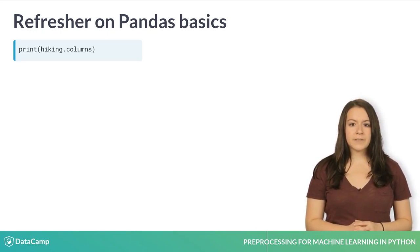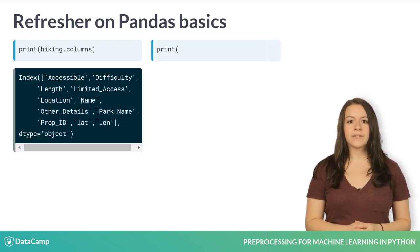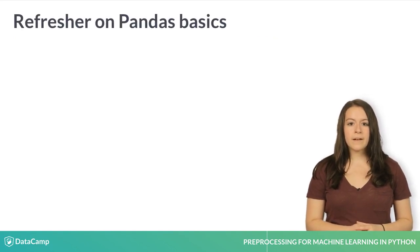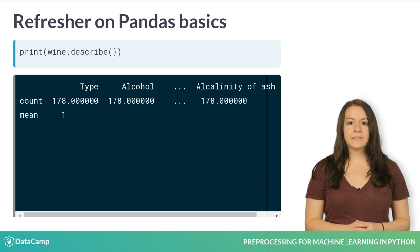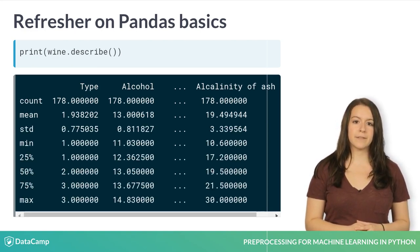It's useful to be able to generate a list of the features present in your dataset. You can easily see the columns in a dataset with a columns attribute, and you can see their data type with a dtype attribute. Finally, you can quickly generate some basic stats about a data frame like the mean, standard deviation, and quartiles using the describe method.